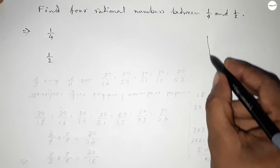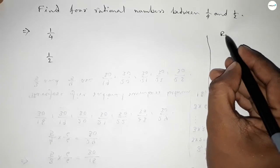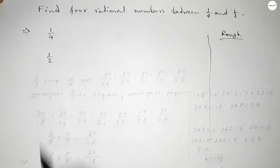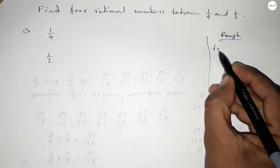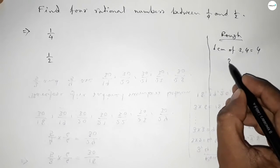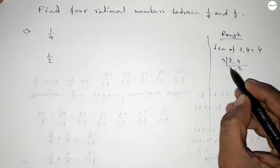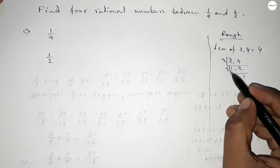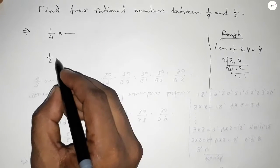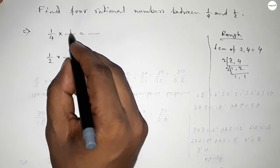Now, the denominators of both fractions are not equal, so first we have to find out the LCM of two and four. Their LCM is four — if you factorize this, it is four.